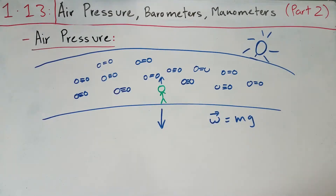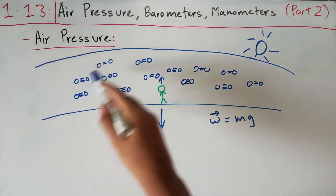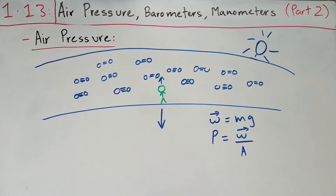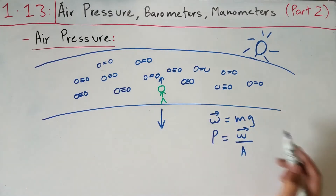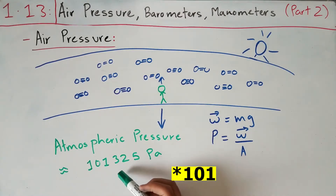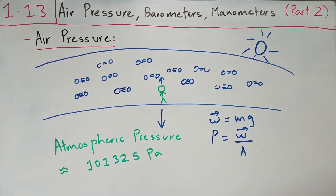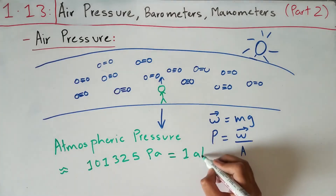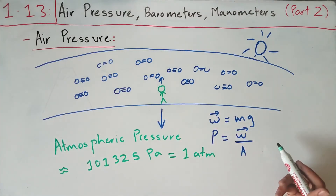Similarly, the particles above the ground exert pressure on it, because their weight acts over the surface area of the earth. From the definition of pressure — weight over area — this gives us atmospheric pressure. Atmospheric pressure is approximately 100,325 pascals. When discussing atmospheric pressure we use another unit: the atmosphere, written as 1 atm. So the pressure around your head at ground level is 1 atmosphere.